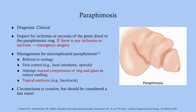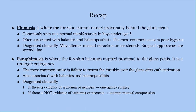You then attempt manual compression of the foreskin ring and glans. What gets it stuck is inflammation and swelling, so by doing manual compression to drain the edema out, that is often sufficient to return the foreskin to its rightful place. A topical antibiotic like bacitracin may be useful if there are signs of secondary infection. Circumcision is curative but should be considered a last resort.